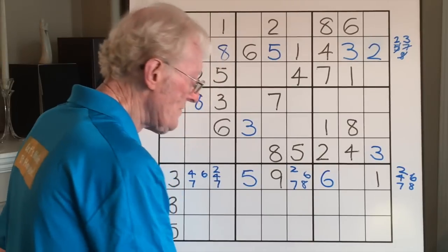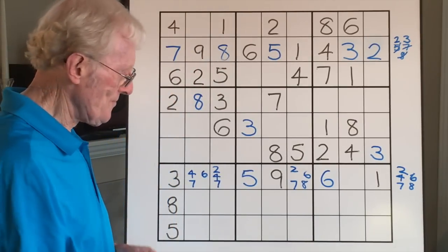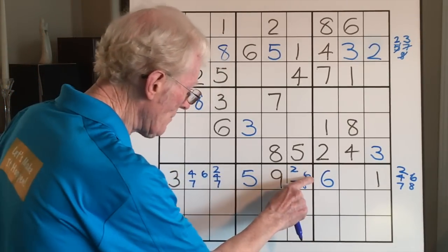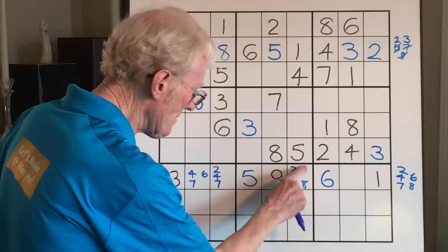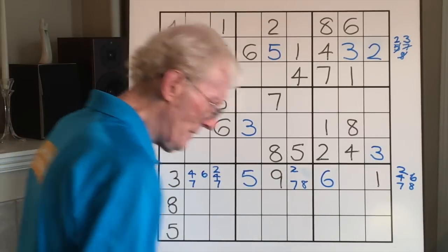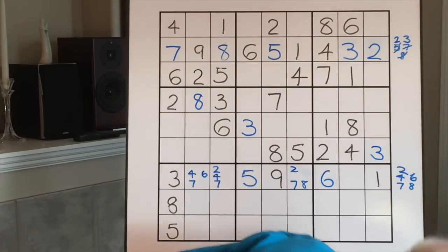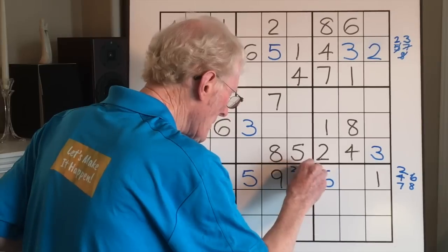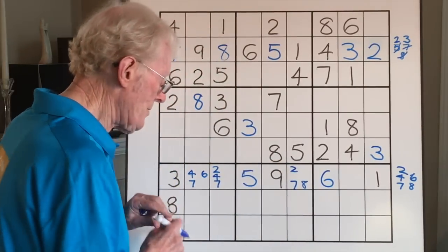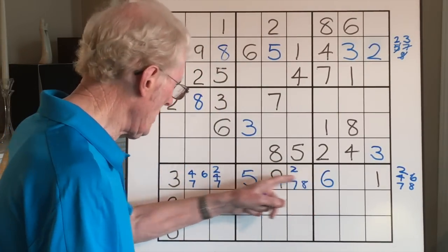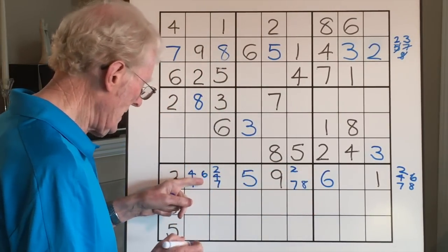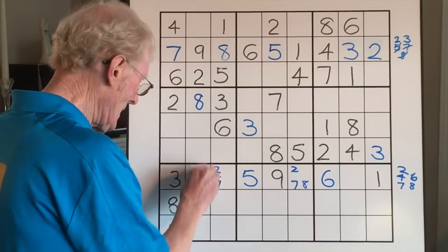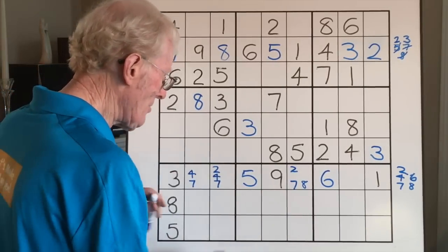So we place a big 6 in that cell. Once you've done that, what are the ramifications? We know we can get rid of this 6 here — and is there any other 6 along here? There's another 6 here — we can get rid of that 6 too. We're making progress.